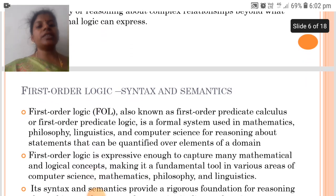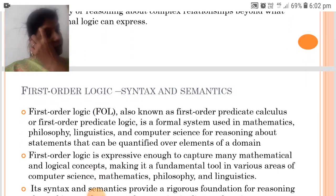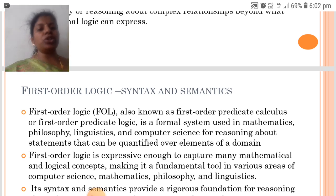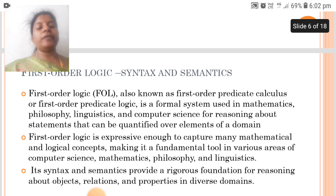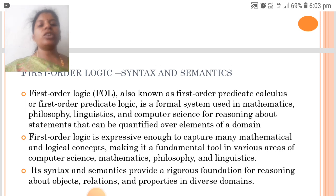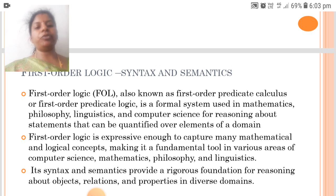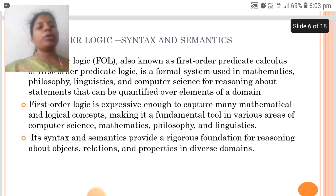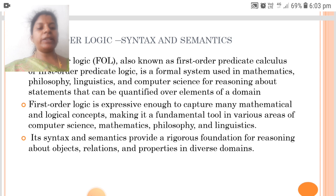First Order Logic, also known as first order predicate calculus or first order predicate logic, is a formal system used in mathematics, philosophy, linguistics and computer science for reasoning about statements that can be quantified over elements of a domain. It is expressive enough to capture many mathematical and logical concepts, making it a fundamental tool in various areas. Its syntax and semantics provide a rigorous foundation for reasoning about objects, relations and properties in diverse domains.